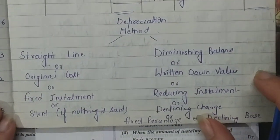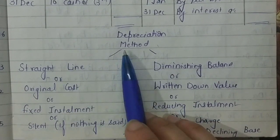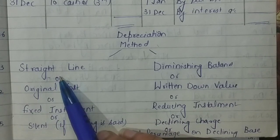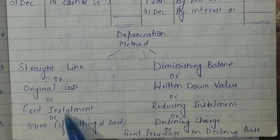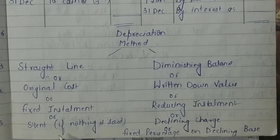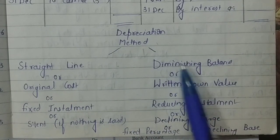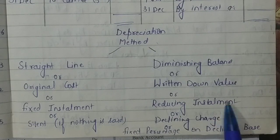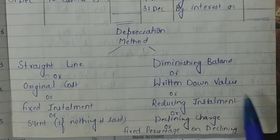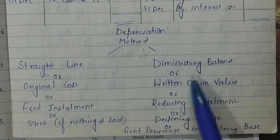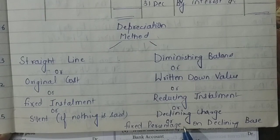For your information — most of you may already know this from 11th class — there are two depreciation methods. The first is Straight Line Method, also known as Original Cost Method or Fixed Installment Method. If the question is silent on which method to use, automatically opt for the Straight Line Method. The second method is the Diminishing Balance Method, also known as Written Down Value (WDV) Method, Reducing Installment Method, Declining Charge Method, or Fixed Percentage on Declining Base. All five names refer to the WDV / Diminishing Balance Method.